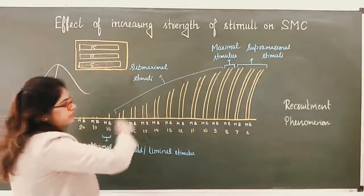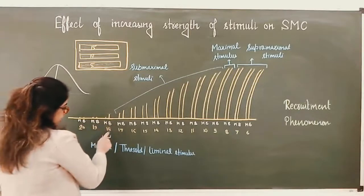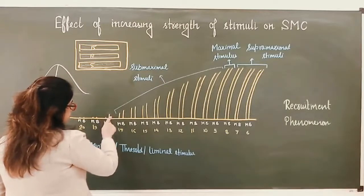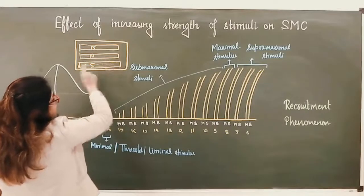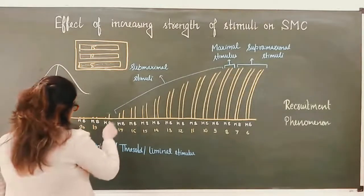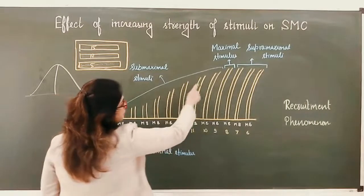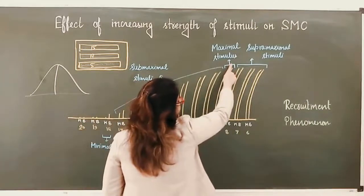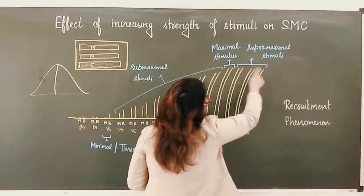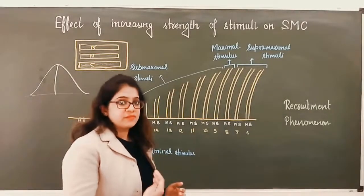By this example we can understand the graph. Here we gave a stimulus with no response. At eighteen centimeters distance between the two coils, there was some response — this is called the threshold stimulus, which corresponds to five millivolts for this muscle. At the point when at least one motor unit comes into picture, that is the threshold stimulus. We kept on increasing the strength of stimuli and the force of contraction kept on increasing. At one point it was maximum. After that we kept on increasing the stimulus strength but there was no change in the force of contraction, because all the motor units had already been recruited.